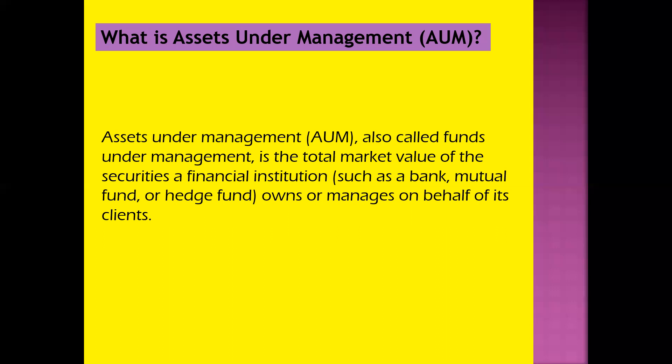AUM is the sum of the market value of all the investments managed by a fund or family of funds, a venture capital firm, brokerage company, or an individual registered as an investment advisor or portfolio manager. For example, if an investor has $50,000 invested in a mutual fund, those funds become part of the total AUM — the pool of funds. The manager can buy and sell shares following the fund's investment objective using all of the invested funds without obtaining any additional special permissions. AUM is also called funds under management.